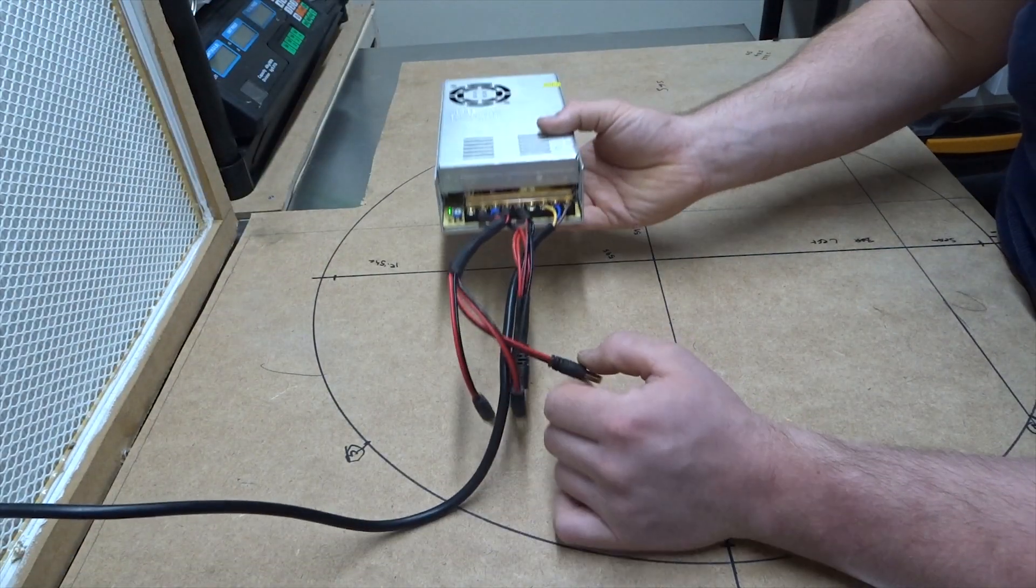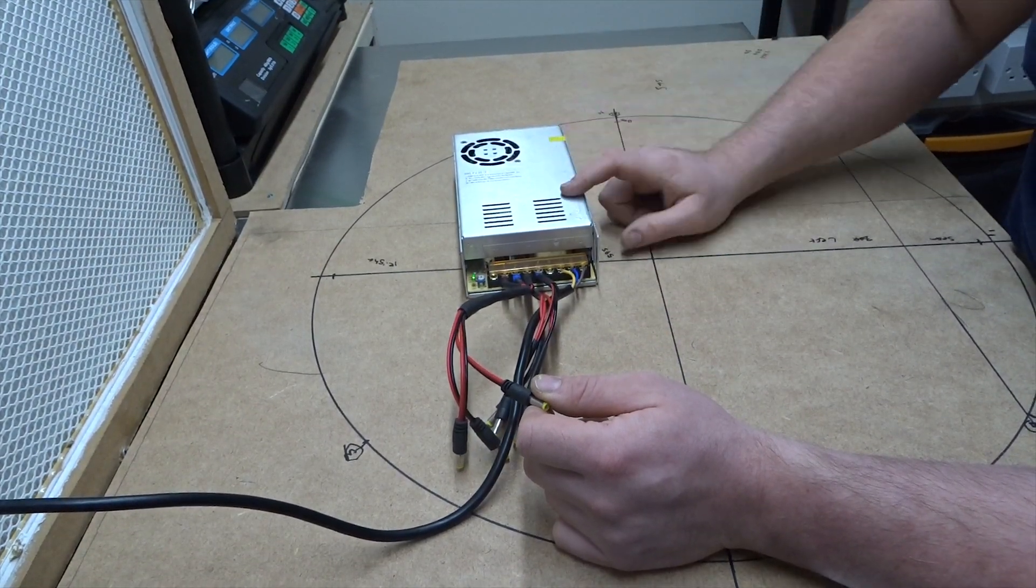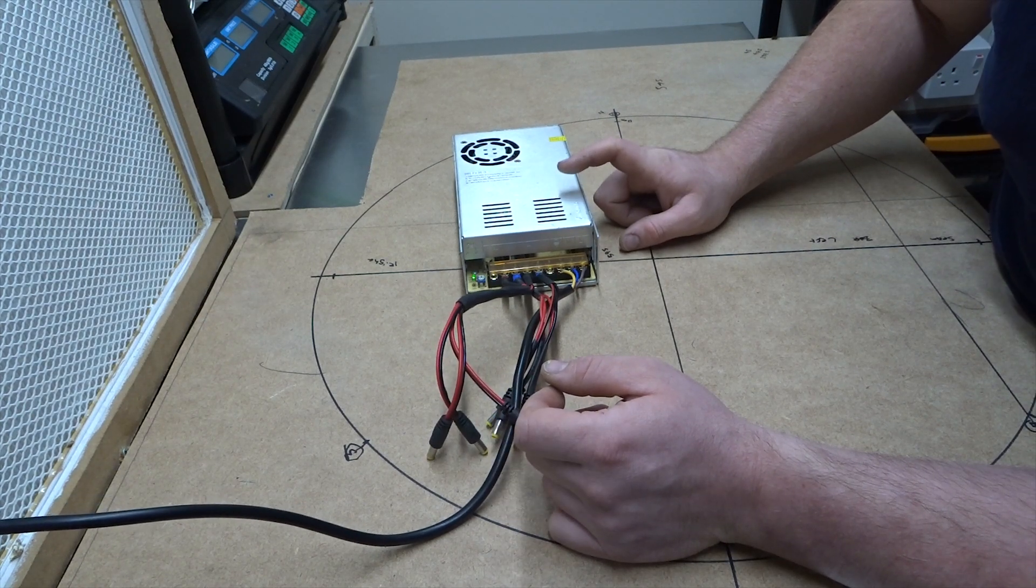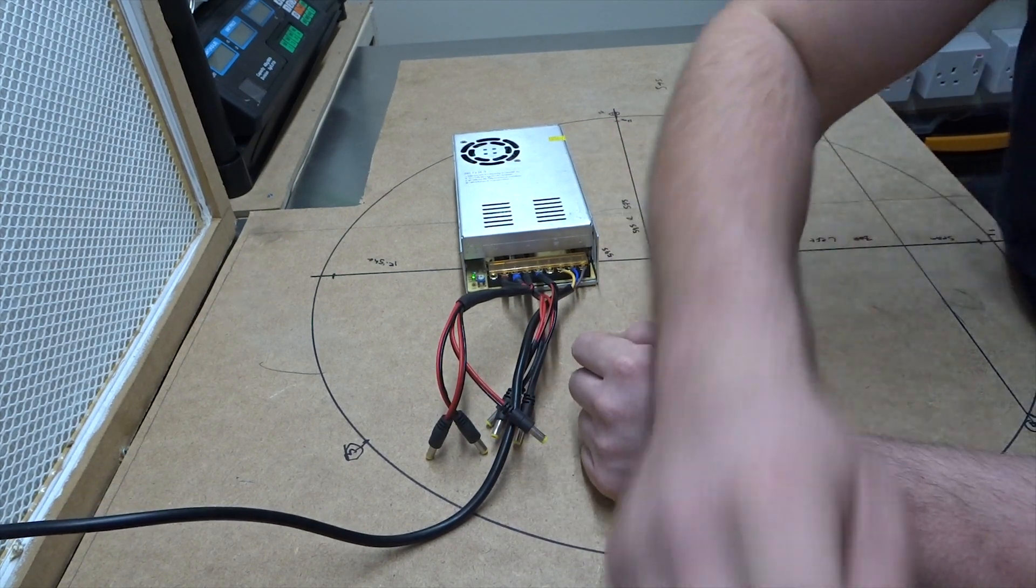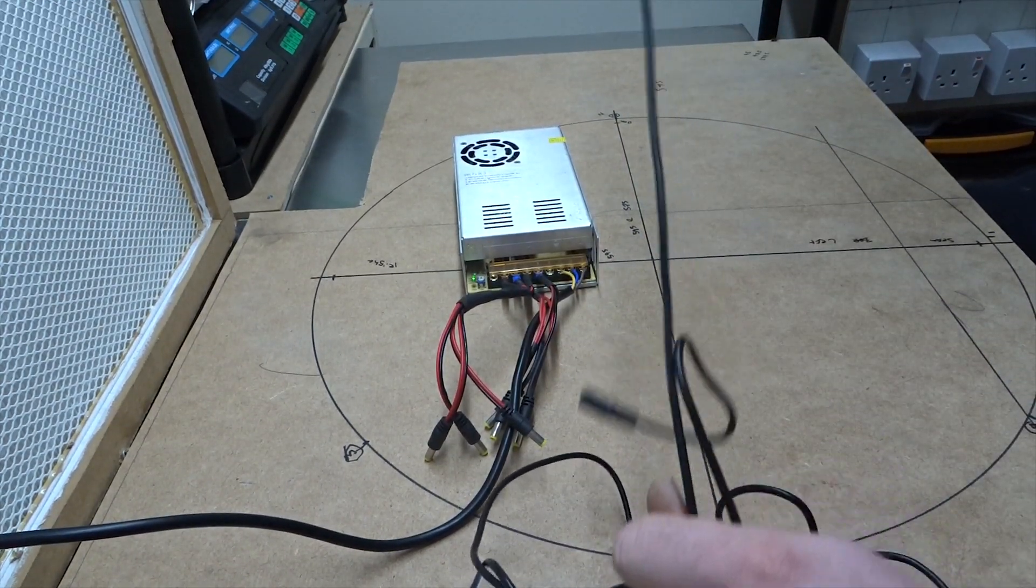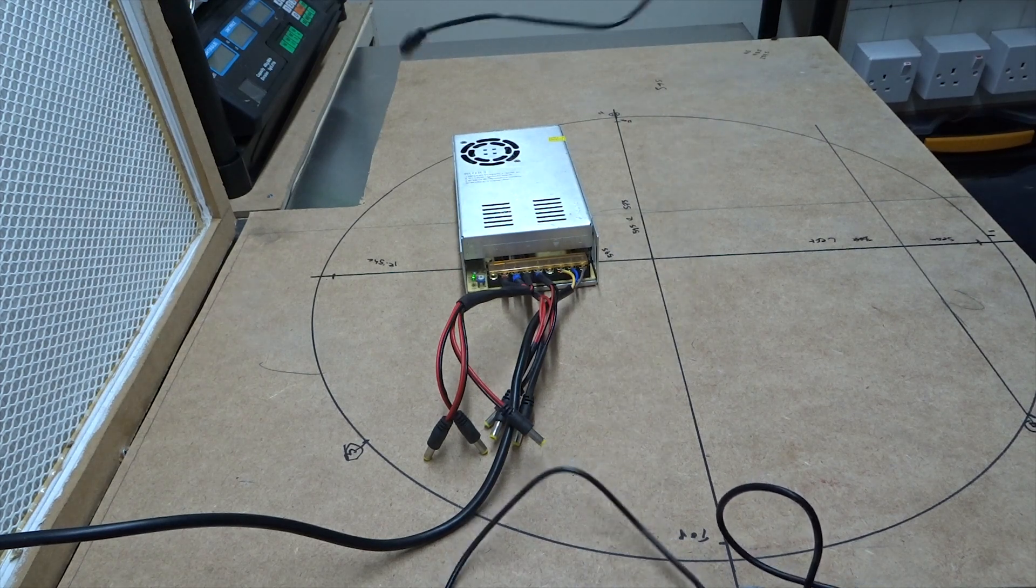So today we're going to make something like this. This is a 24 volt transformer. It turns 240 volt AC into 24 volt DC which is what these wee bad boys run off. These are ultrasonic misters as you may be familiar with.